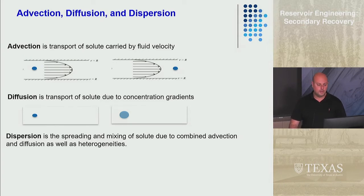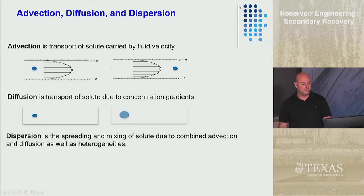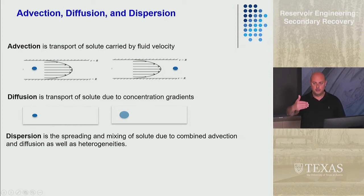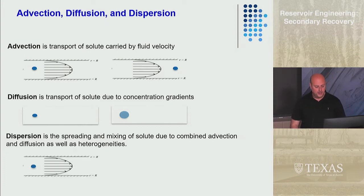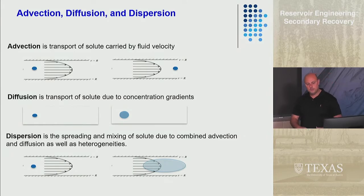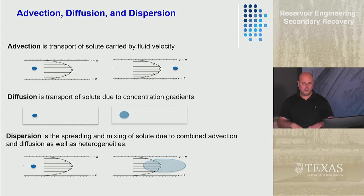Dispersion requires advection to occur, but it's an additional transport mechanism on top of advection. If you had your concentration of component flowing in a pipe and went downstream, it wouldn't just be further downstream — it would be spread out, and much more spread out than just diffusion, because of this dispersion.